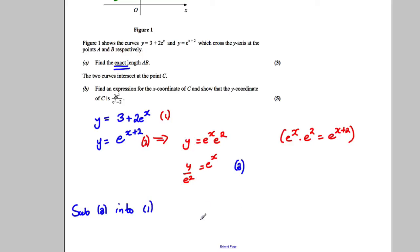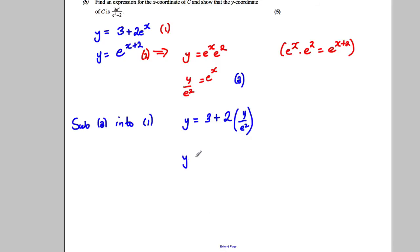And so what I could do is I could therefore substitute that in. So I would get that y is equal to 3 plus 2y over e^2 like that. So y is equal to 3 plus 2y over e^2. Multiply everything through by e^2. e^2·y equals 3e^2 plus 2y.